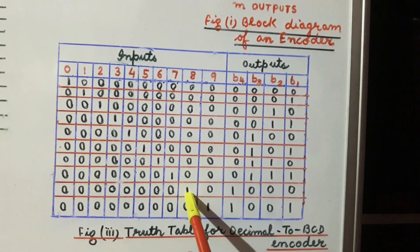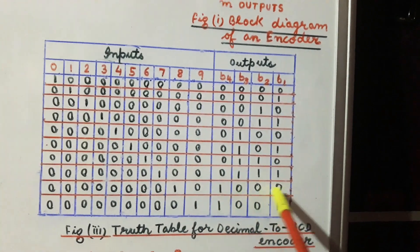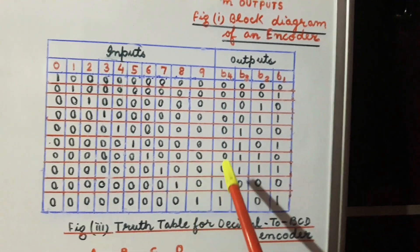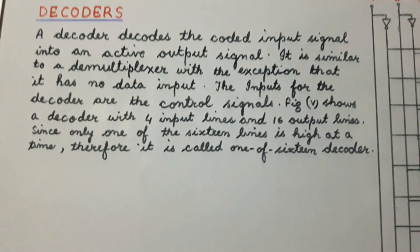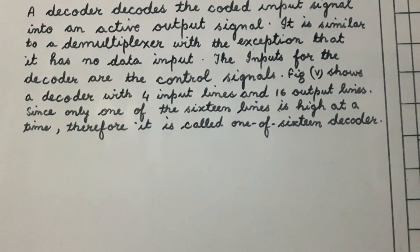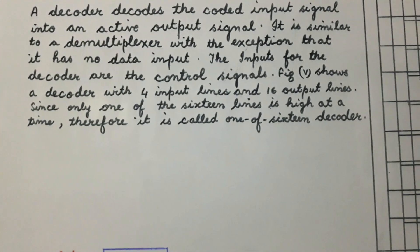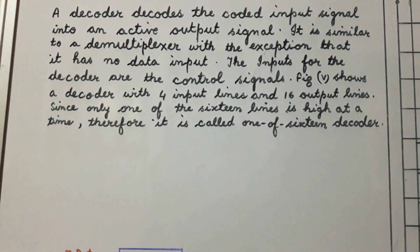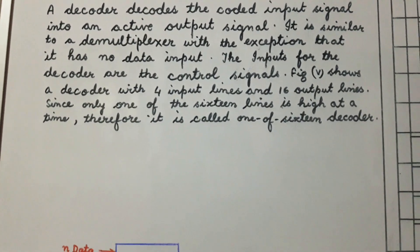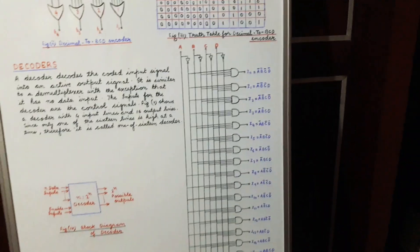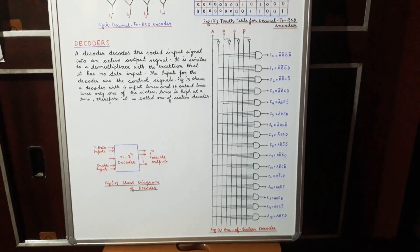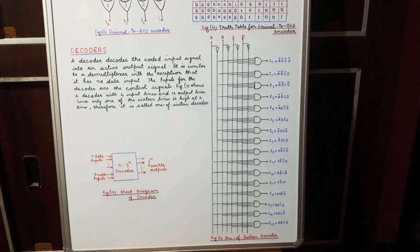The truth table for the decimal to BCD encoder is shown in figure 3. From figure 3 we find that when input 0 is 1 — that is, when switch 0 is pressed — the output will be 0000. When switch 1 is pressed and active, the output in BCD will be 0001. Similarly, if we press switch 2, we get the output 0010, which is the BCD equivalent of 2.